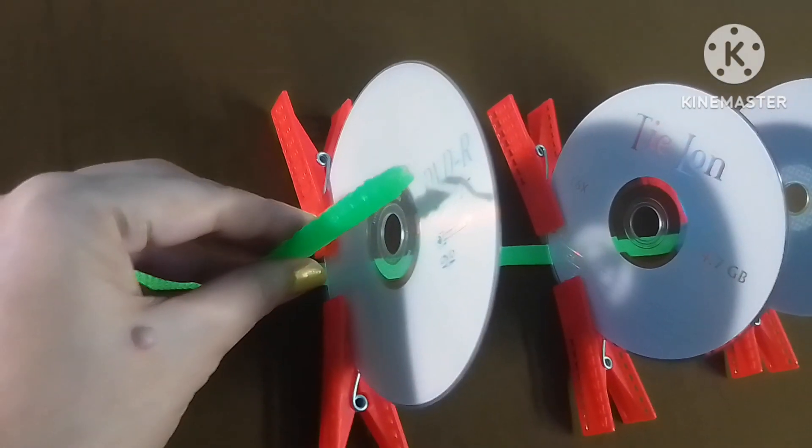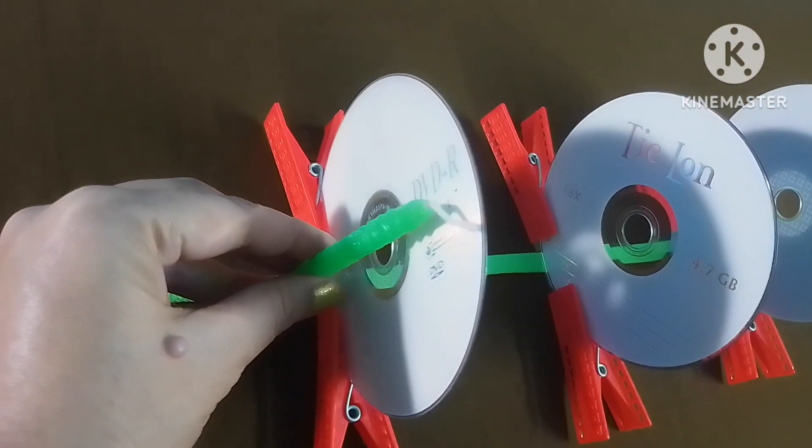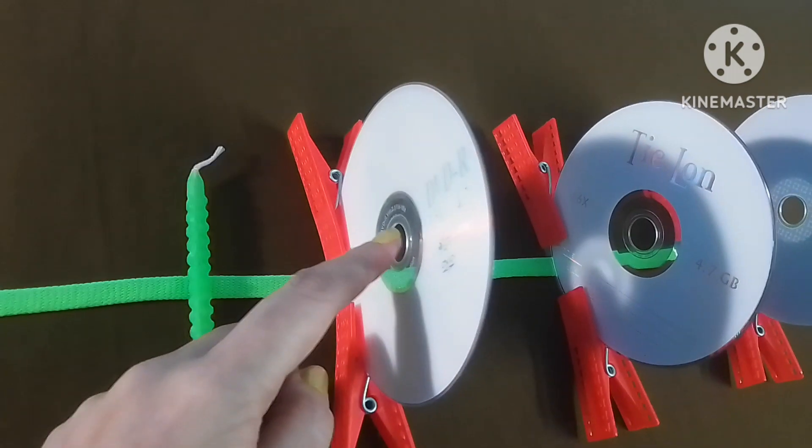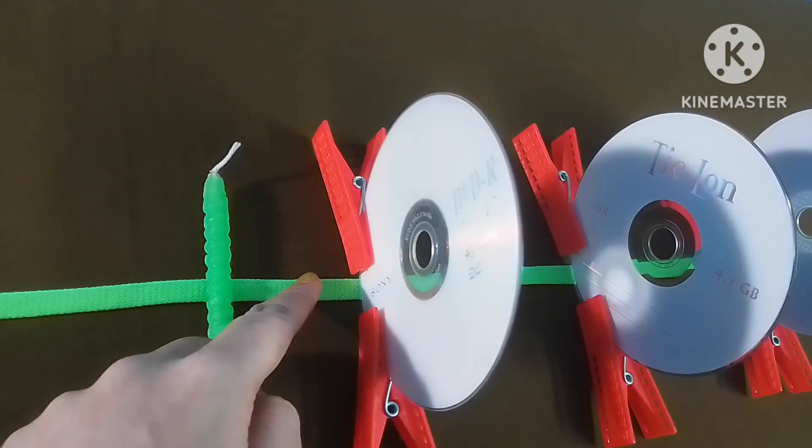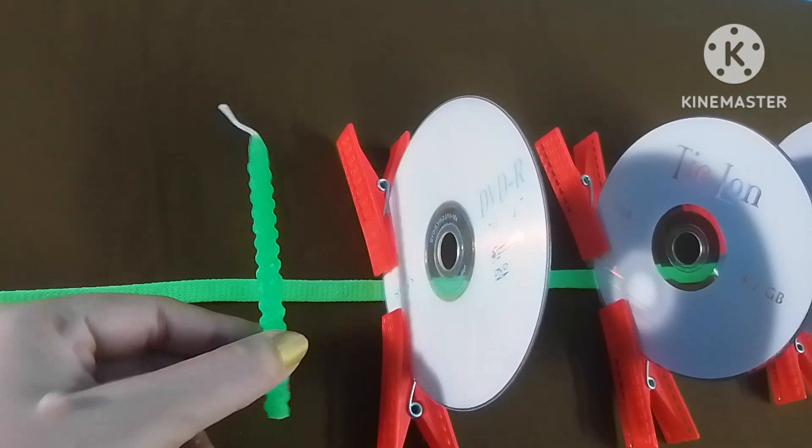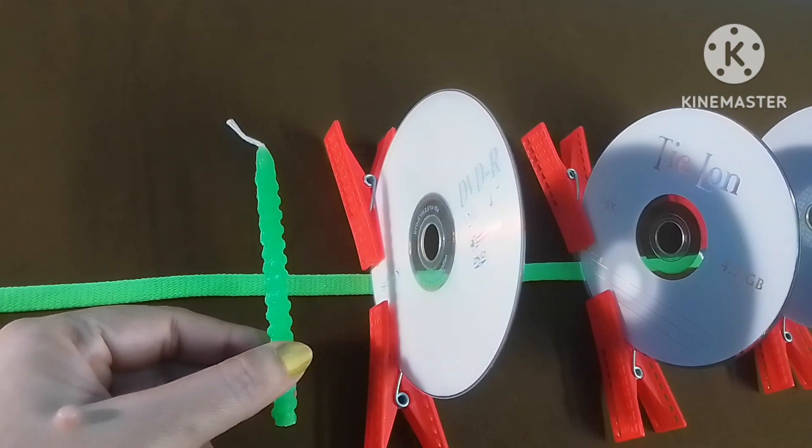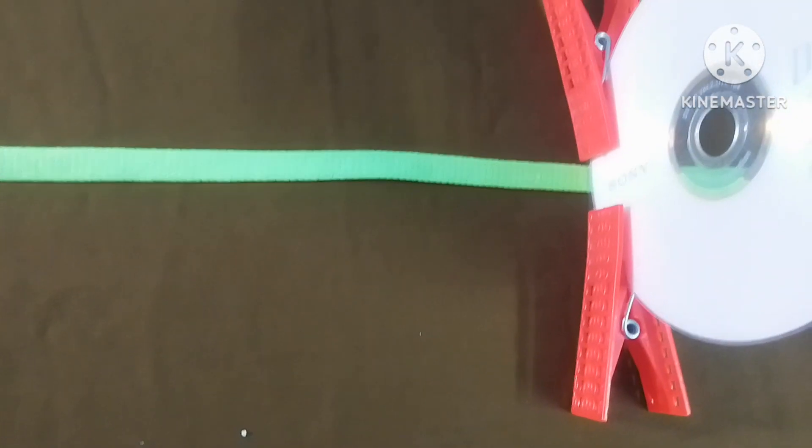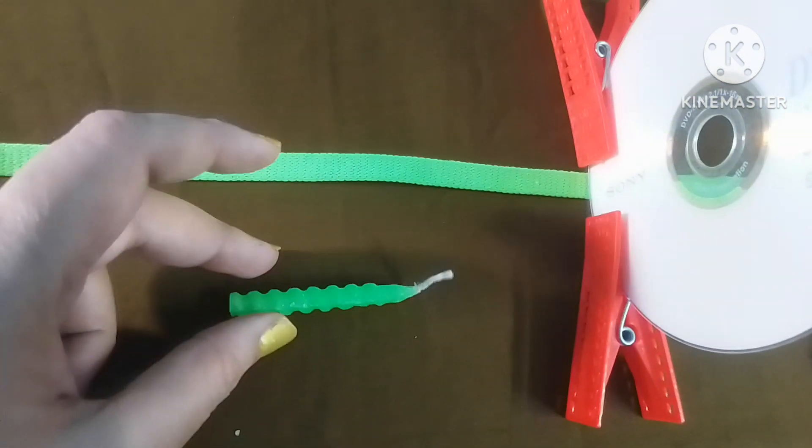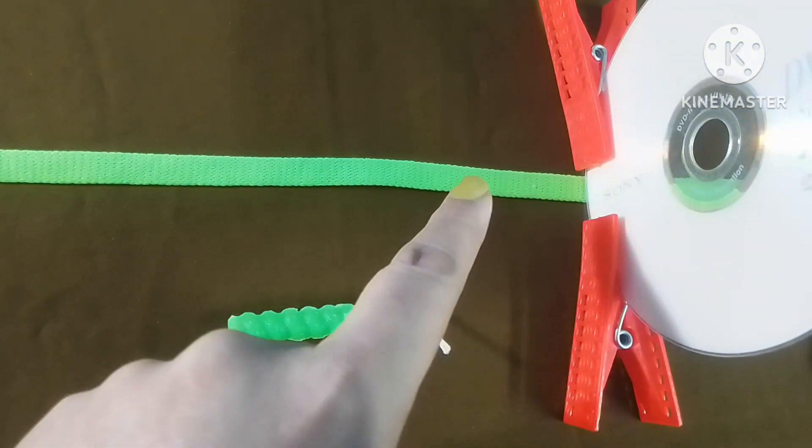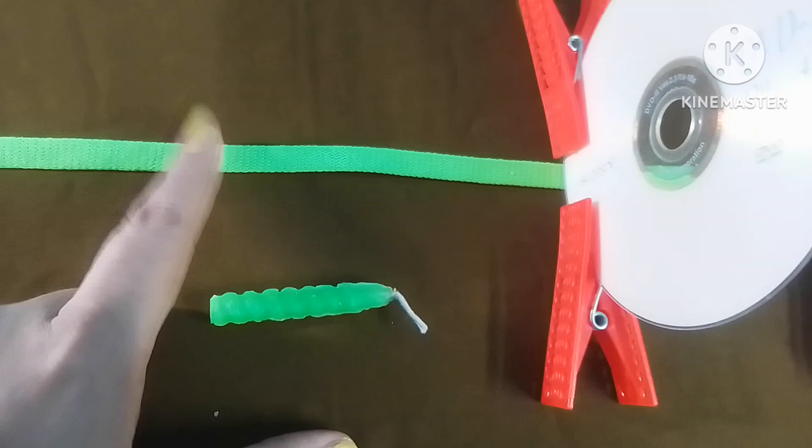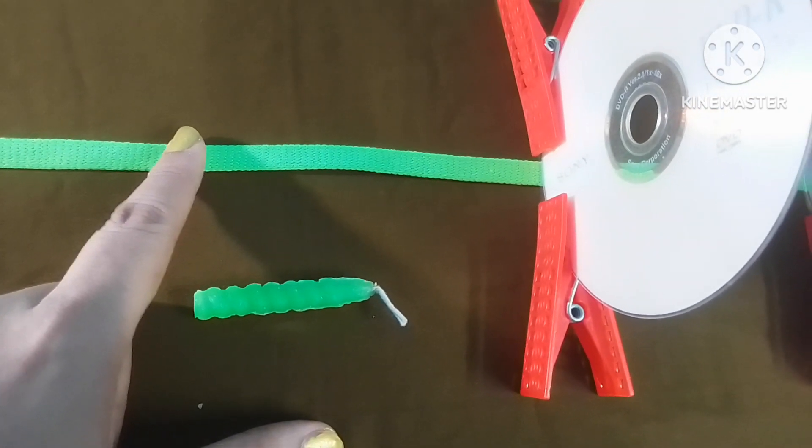Now cut the candle according to the measurement so that the height of the candle should be the height of the hole of the CDs. After cutting the candle, we have to place it on a metal container on the same thread.